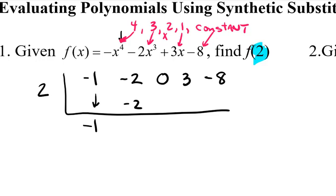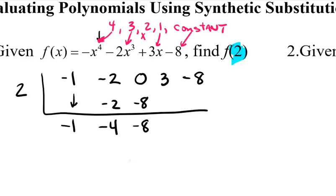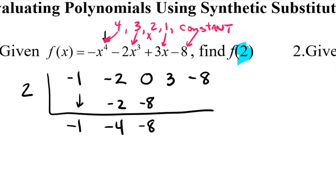Now the next pair of numbers, negative 2 and negative 2, you find the sum. Negative 2 plus negative 2 gives us negative 4. Then again, we're going to take that 2 on the outside, and we're going to multiply that by negative 4. So 2 times negative 4 is negative 8. When I add up 0 and negative 8, my sum is negative 8. Again, I'm going to multiply 2 times negative 8, their product gives me negative 16.